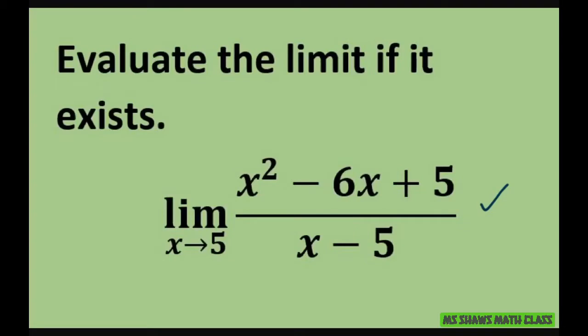So the goal when you're doing the limits is just not automatically plugging in the 5, because what will happen if you plug in 5 in the denominator, you'll get 0, and you can't divide by 0.